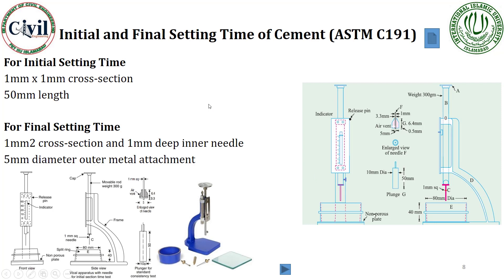How does initial and final setting time be found out using the Vicat apparatus? In the same Vicat apparatus, you have calculated the consistency of cement. First, you have to calculate the consistency of cement. At a desired water content, you will get the consistency. For example, if the cement gains its desired consistency — meaning the penetration of the plunger is 5-7 mm from the bottom slab — at 36% water content, then you add 36% of water into the cement and fill the cylindrical ring with cement paste and place it over the Vicat apparatus.